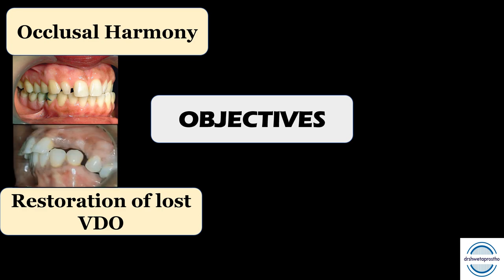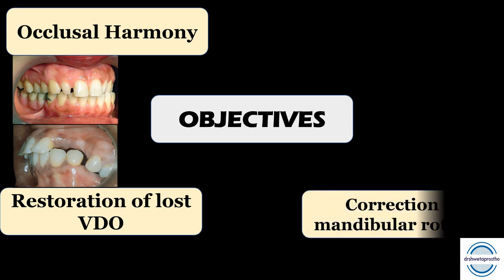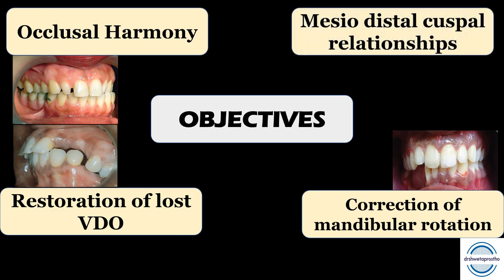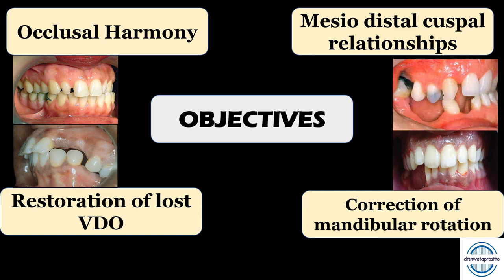The third objective is the correction of mandibular rotation, which mainly occurs as a result of the unilateral loss of posterior teeth, causing mandibular deviation in the path of closure. The fourth, and very important, is the mesiodistal cuspal relationship. Maintaining harmony with teeth already present is critical because with the loss of teeth, they may have changed their positions, potentially leading to malocclusion. This needs to be considered while establishing occlusion in our prosthesis.